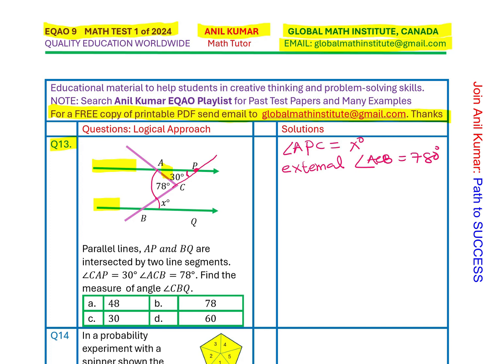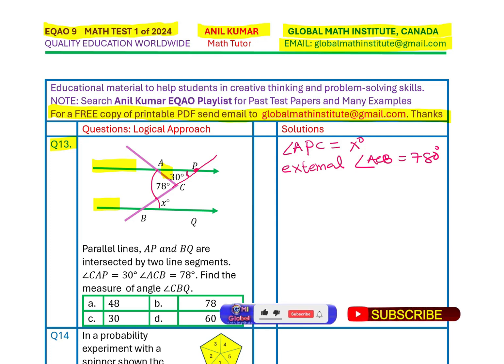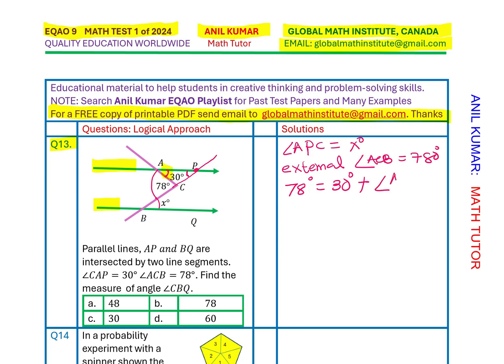That way is, we could actually get a solution. That is one way of doing it. Now, let us also discuss the alternate ways of doing it. Now, let us continue with this itself. We know this is 30 degrees. So, we know that 78 degrees is equal to 30 degrees plus angle APC.